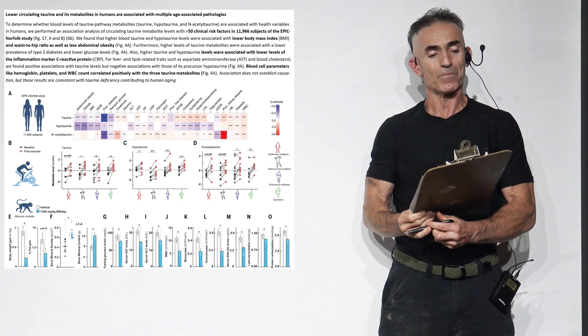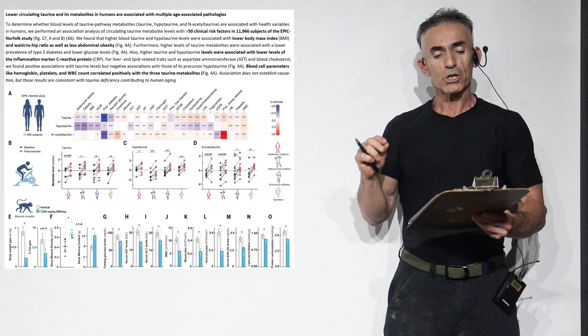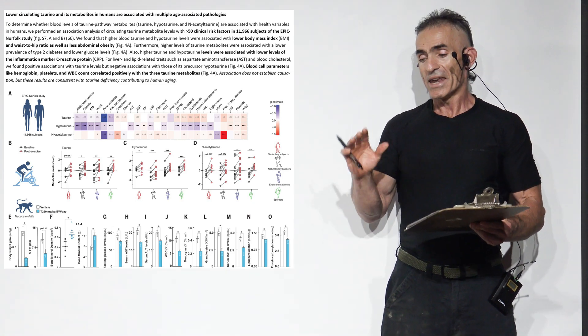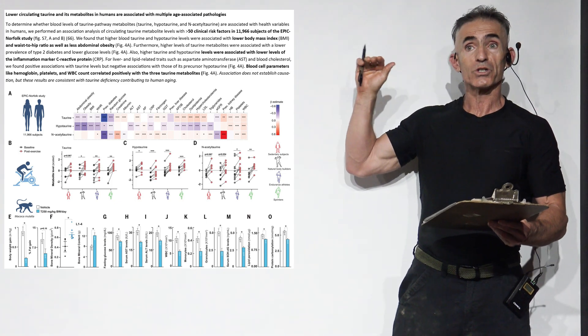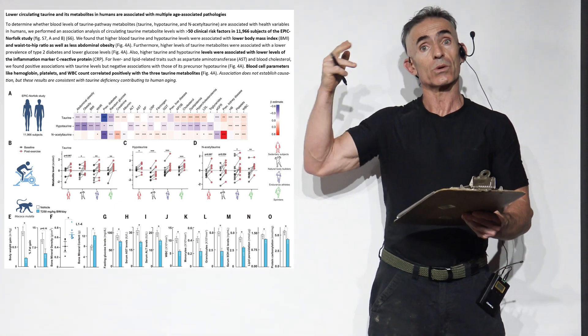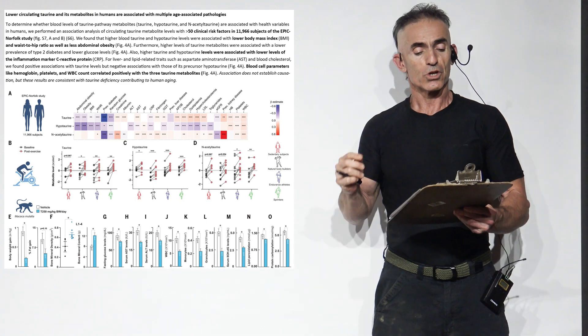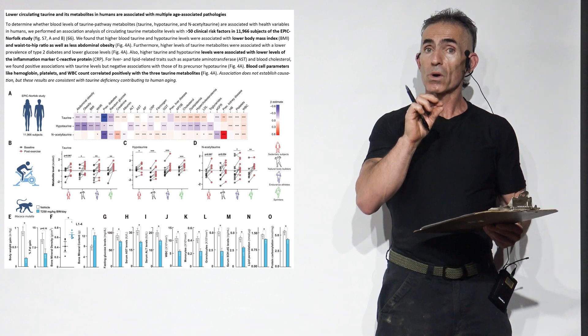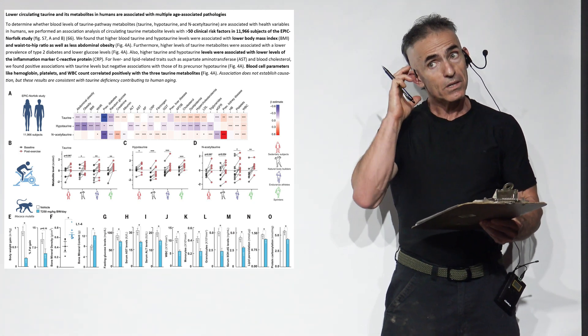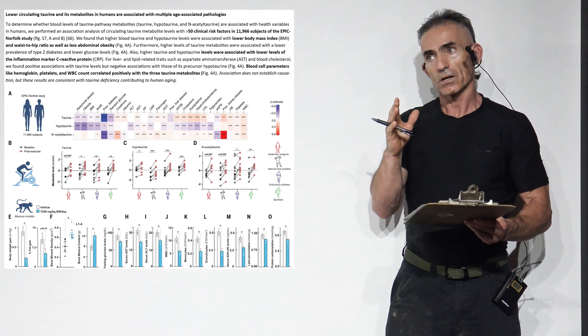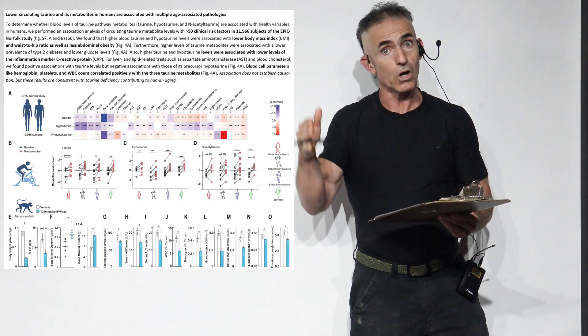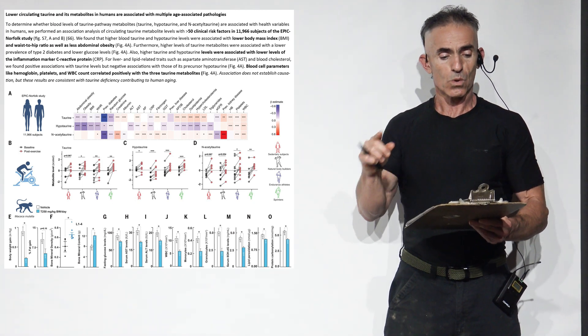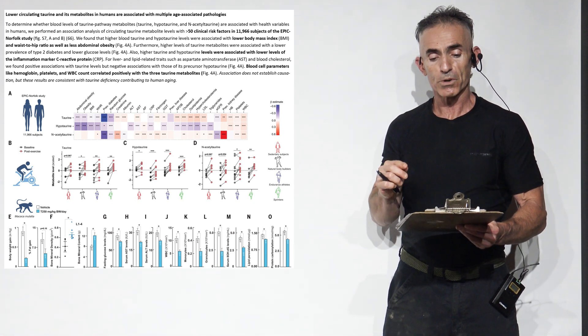Now let's go into the full study. Lower circulating taurine and metabolites in humans are associated with multiple age-associated pathologies. I put the chart up there as well, so you can draw a visual reference. To determine whether the blood levels of taurine pathway metabolites - taurine, hypotaurine - hypotaurine is a metabolite.